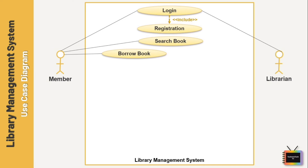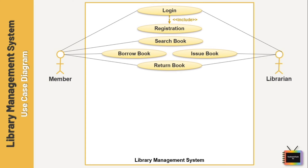When a member needs a book, the librarian will issue it. So the member borrows a book and the librarian issues it to the member. Next I am adding the use case 'return book' — at some point the member wants to return a book to the library. That is why I have connected this use case with both member and librarian.